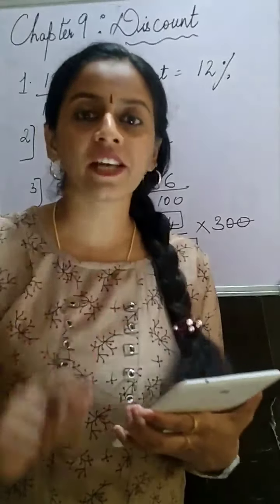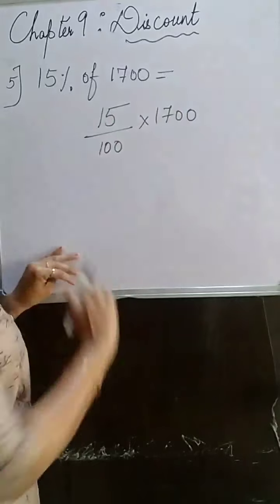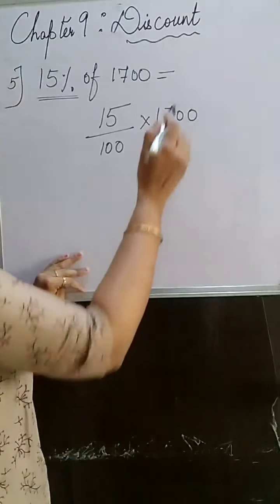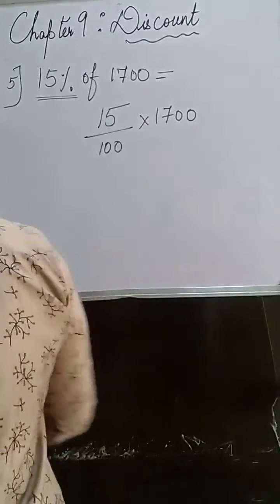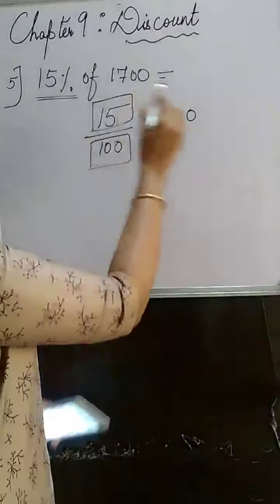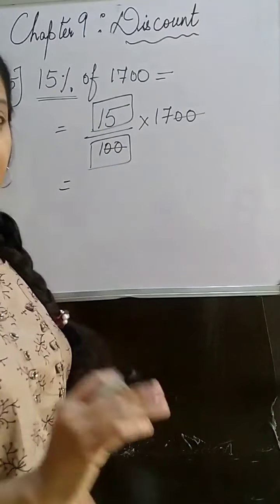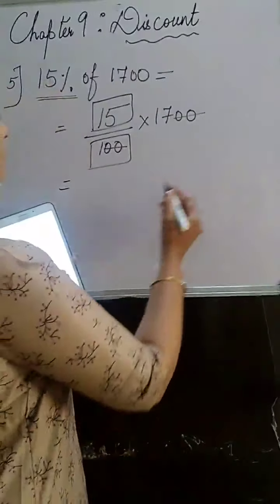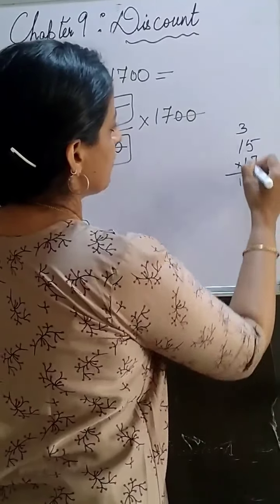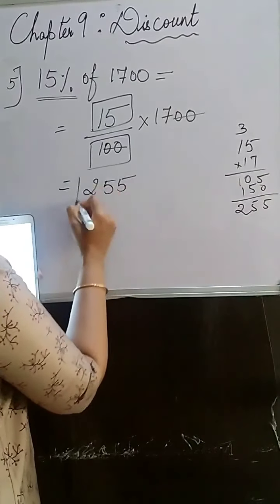Similarly, solve the fifth one — pause and check the answer. The fifth question is 15% of 1700. Percent given means 15 upon 100, multiply by 1700. Two zeros cancel, leaving 15 × 17. Multiply: 15 × 17 — 7 fives are 35, carry 3; 1 seven is 7, plus 1 is 8; then 1 × 1. So 15 × 17 = 255. The final answer is 255.